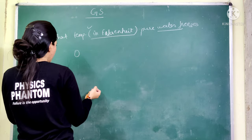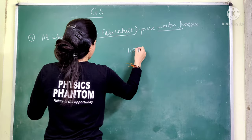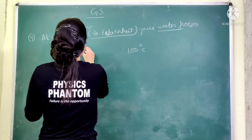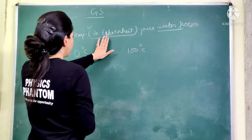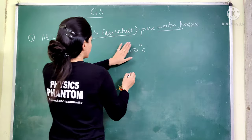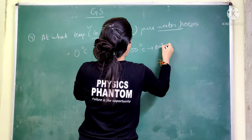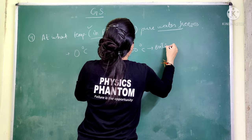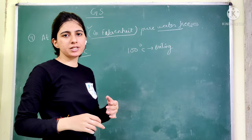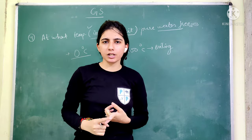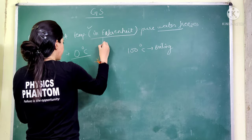The freezing point of water is 0 degrees Celsius and the boiling point is 100 degrees Celsius. You will commonly hear these two points in Celsius.